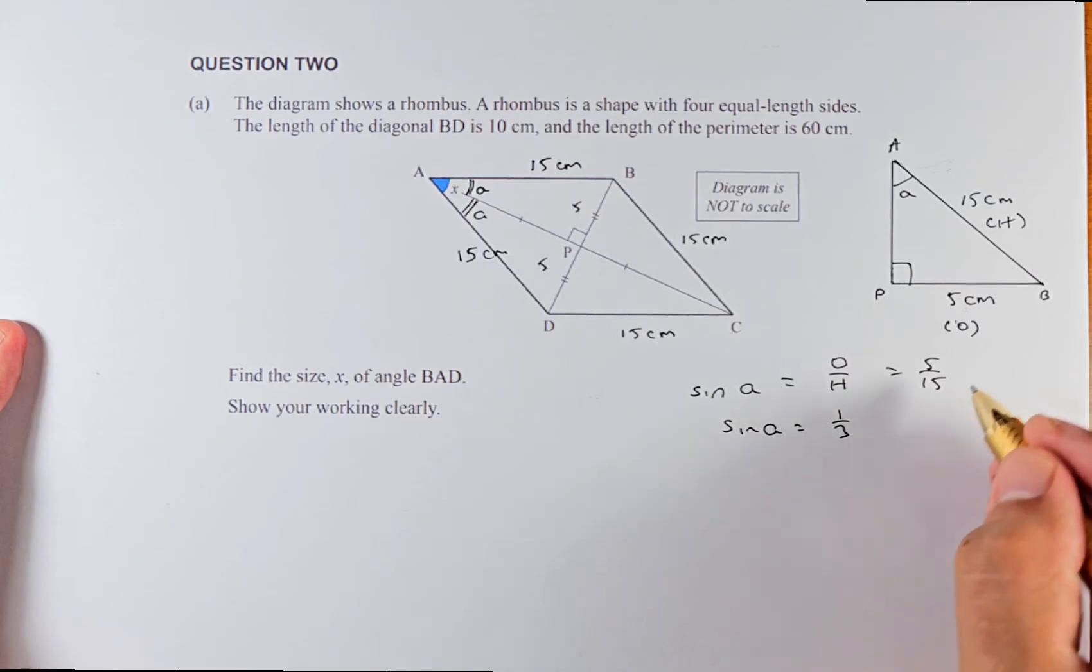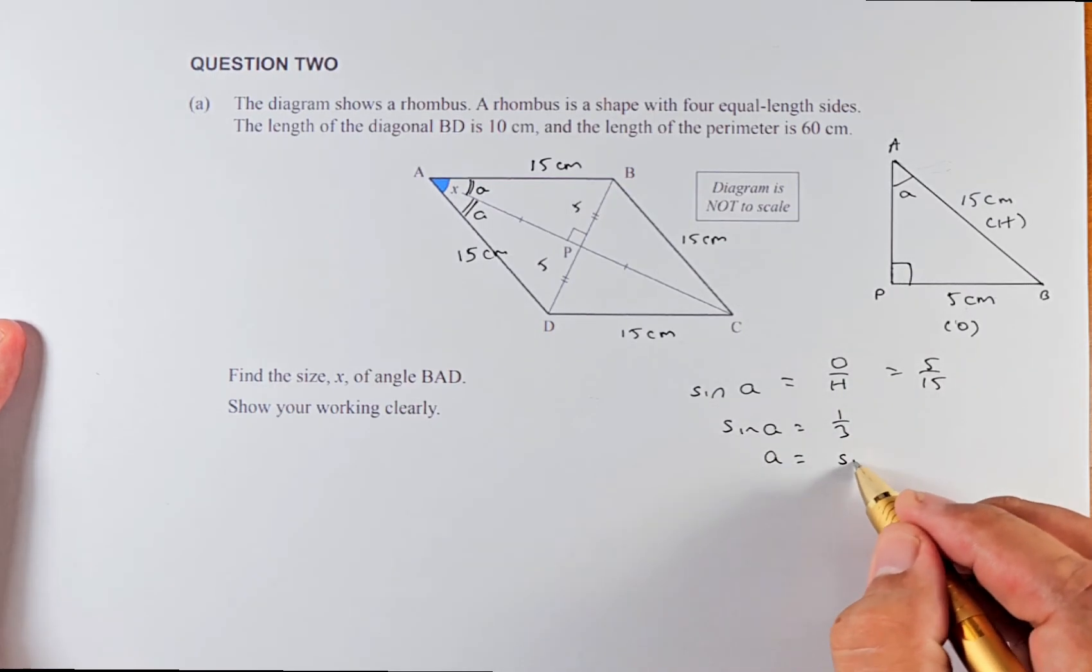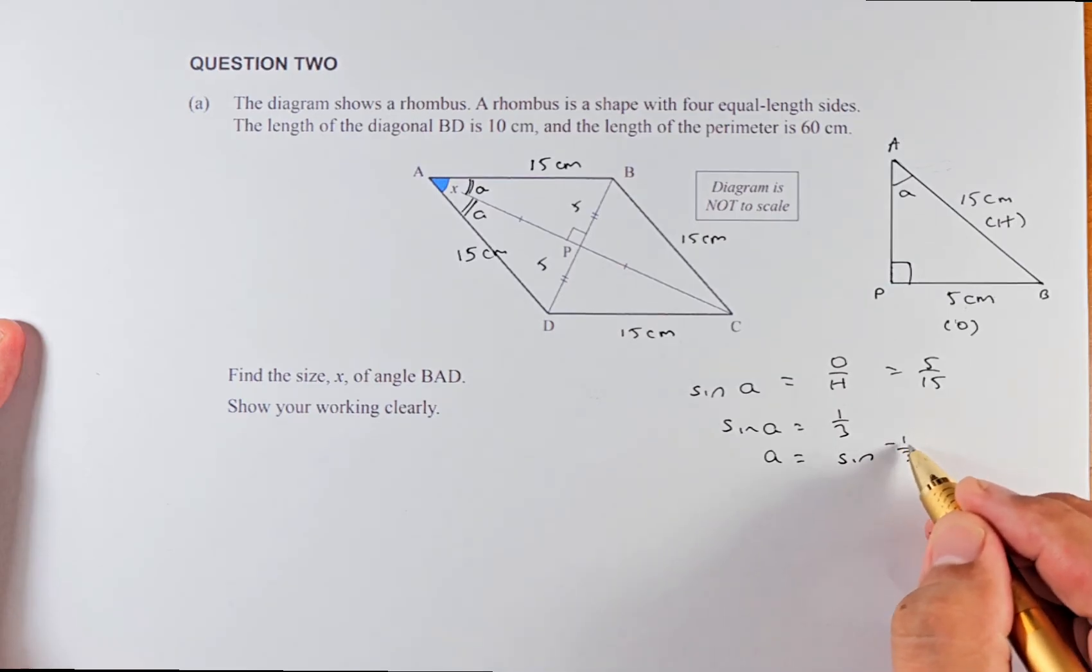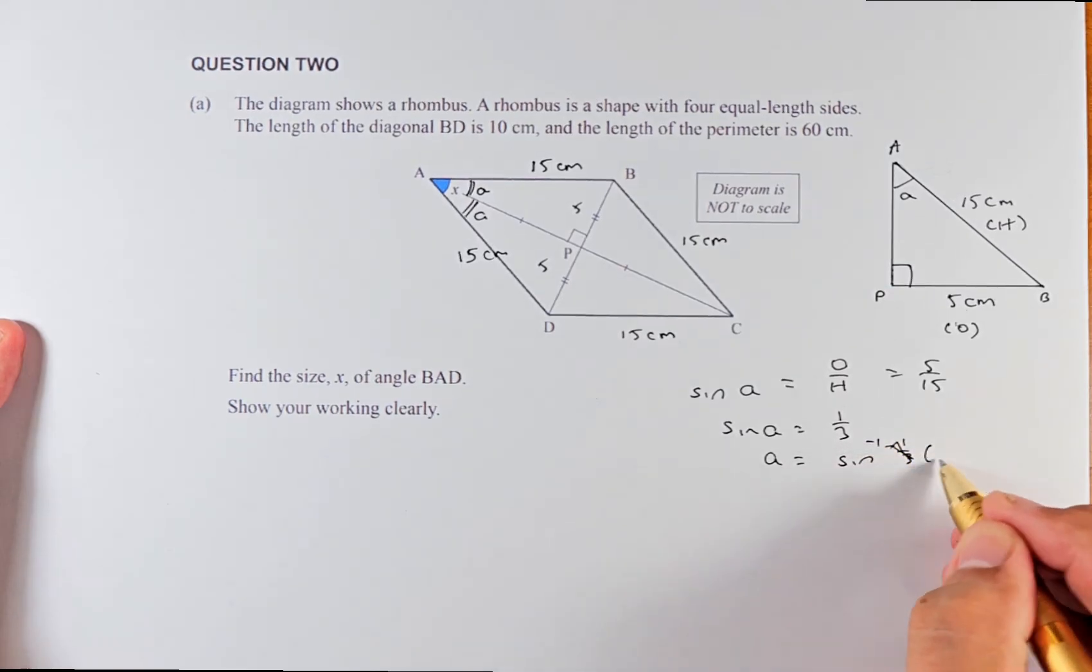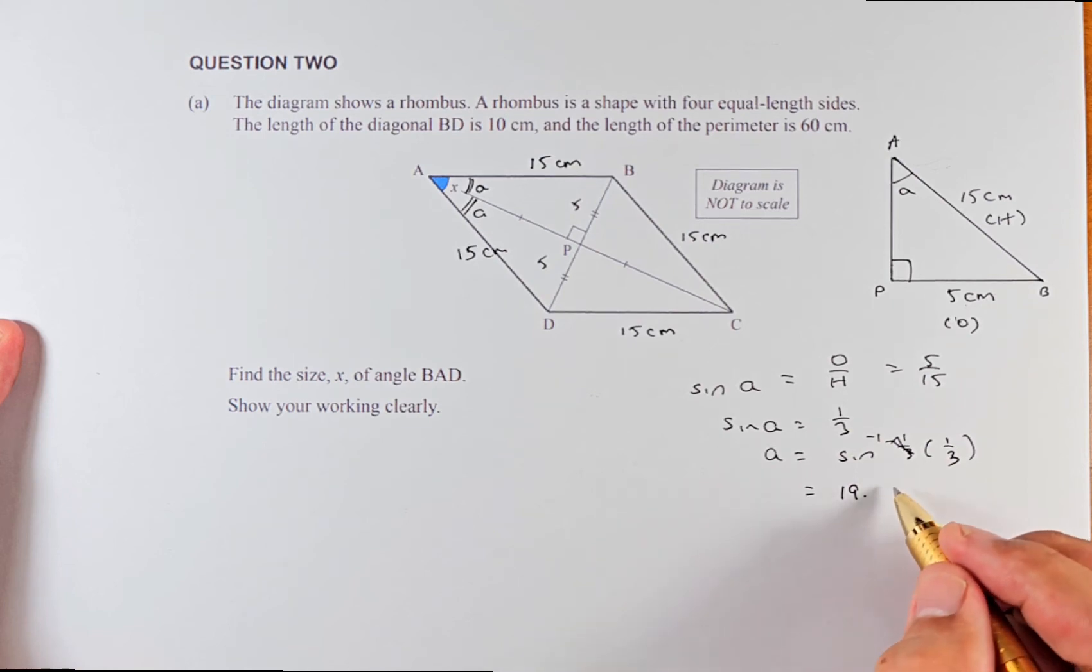So sine a equals 1 over 3. To get a, we need to take the inverse sine of one third. Put it in your calculator and the answer is going to be 19.47 degrees.